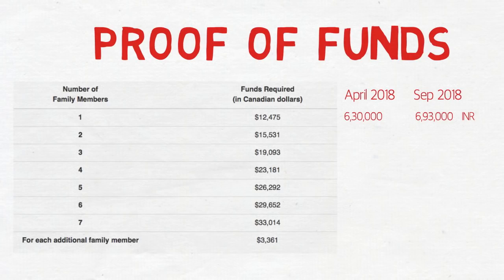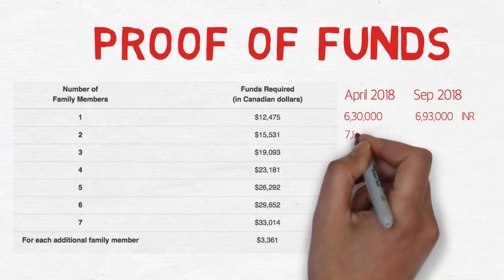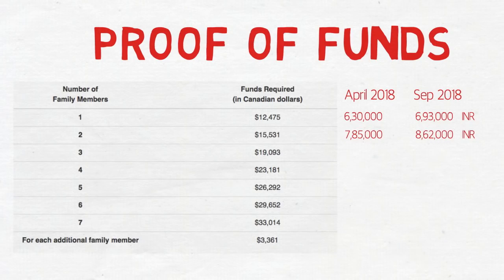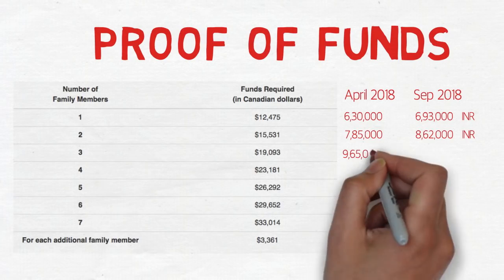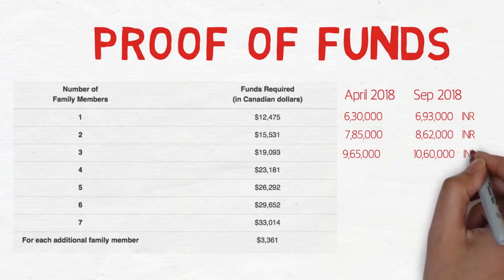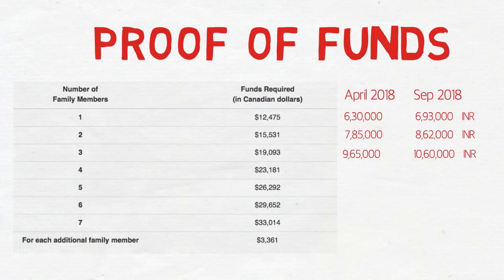In April, for two people — you and your spouse — you needed around 7,85,000 rupees, but now you need 8,62,000 rupees. For three people, in April you needed around 9,65,000 rupees, but now you need around 10,60,000 rupees — about 1 lakh more. And there are predictions that the US dollar and Canadian dollar will get even stronger in the coming weeks, so this may rise even more.